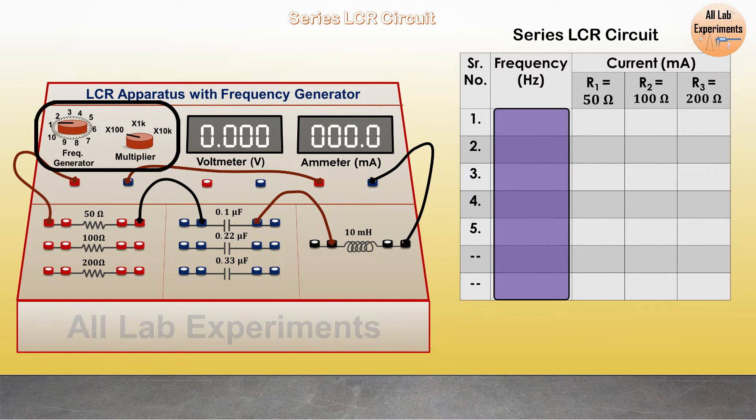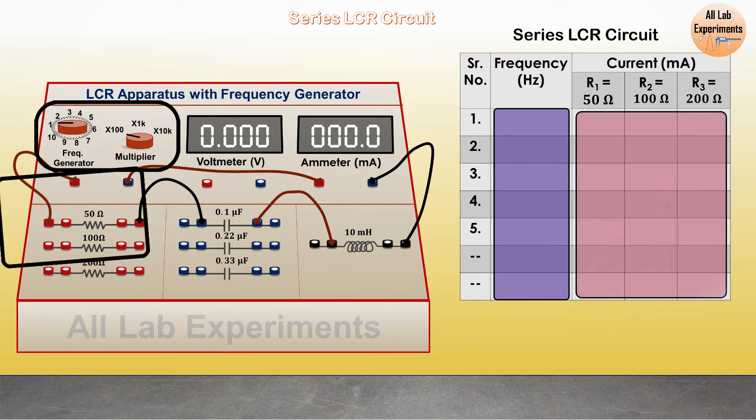Then we can change its multiplier to 1k, which means 1000, so in that case these figures will show 1000, 2000, 3000 hertz of frequency. In this way we can choose different frequencies and observe the current in the circuit through this ammeter.